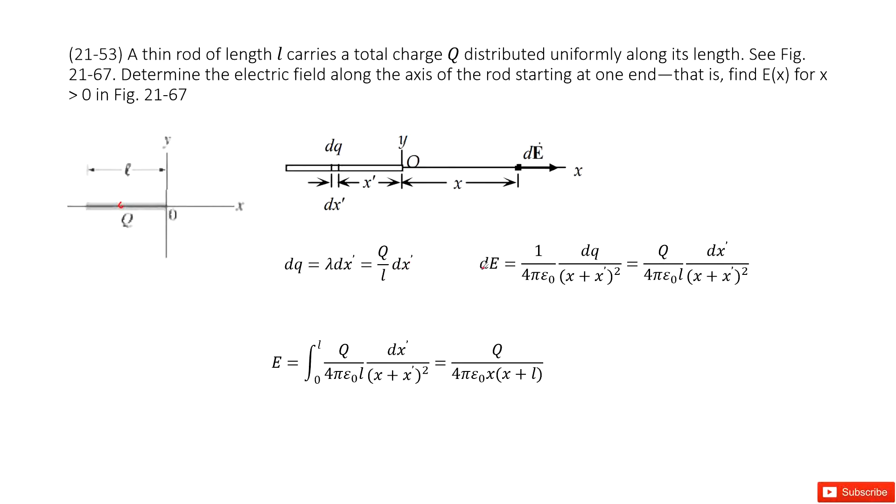And then we can write the magnitude of the electric field density for this fraction at the location x in this way, right? 1 over 4π epsilon naught is a constant, times the charge dq divided by the distance squared.